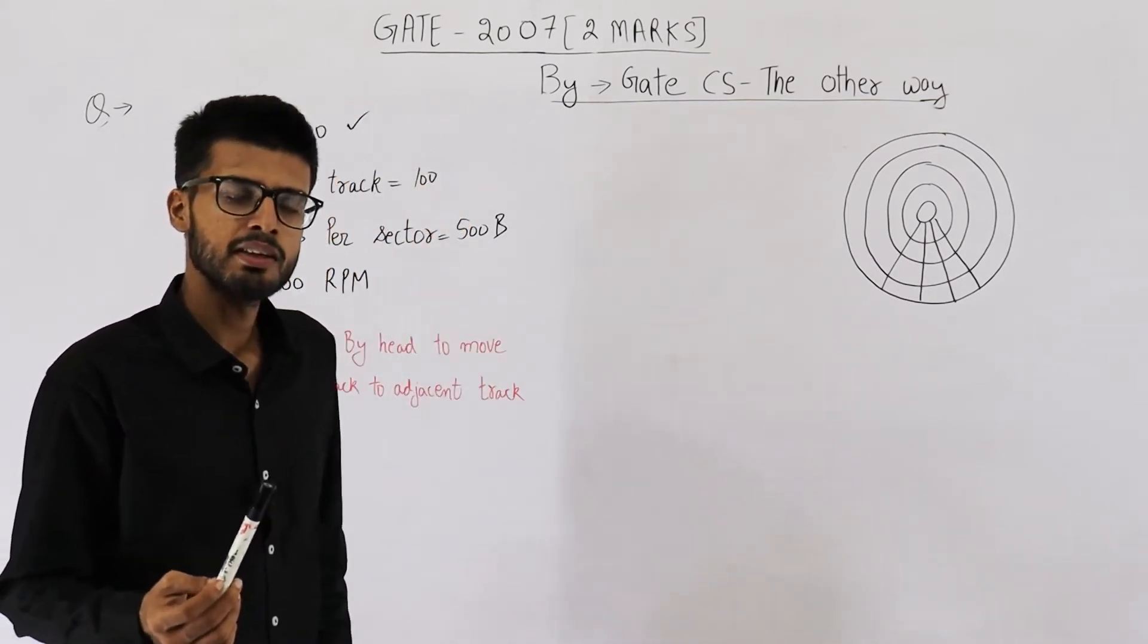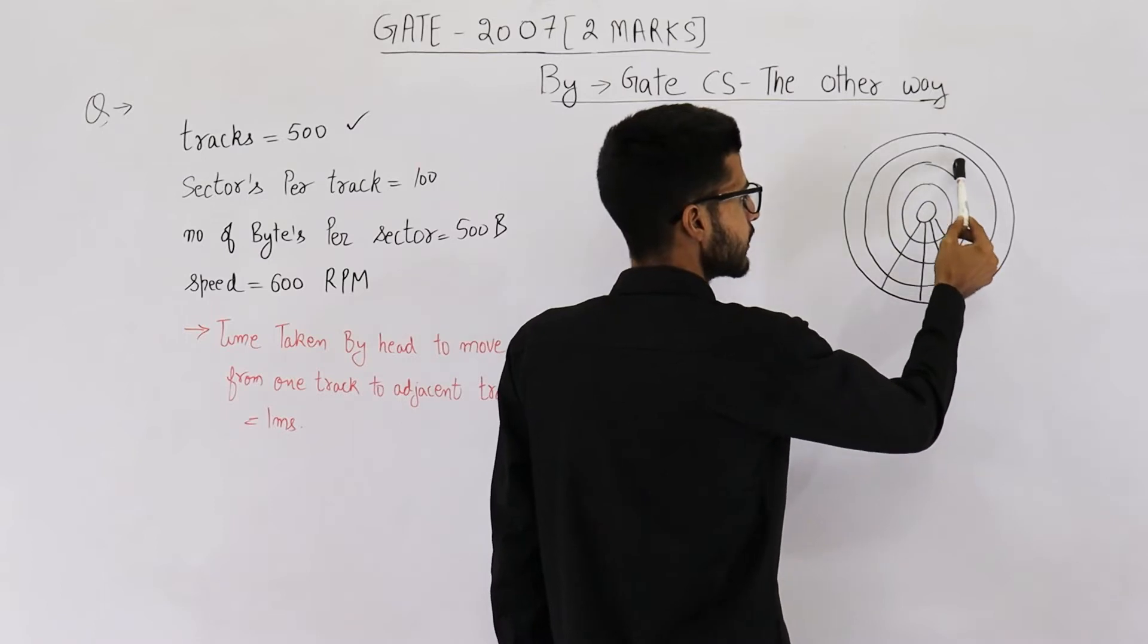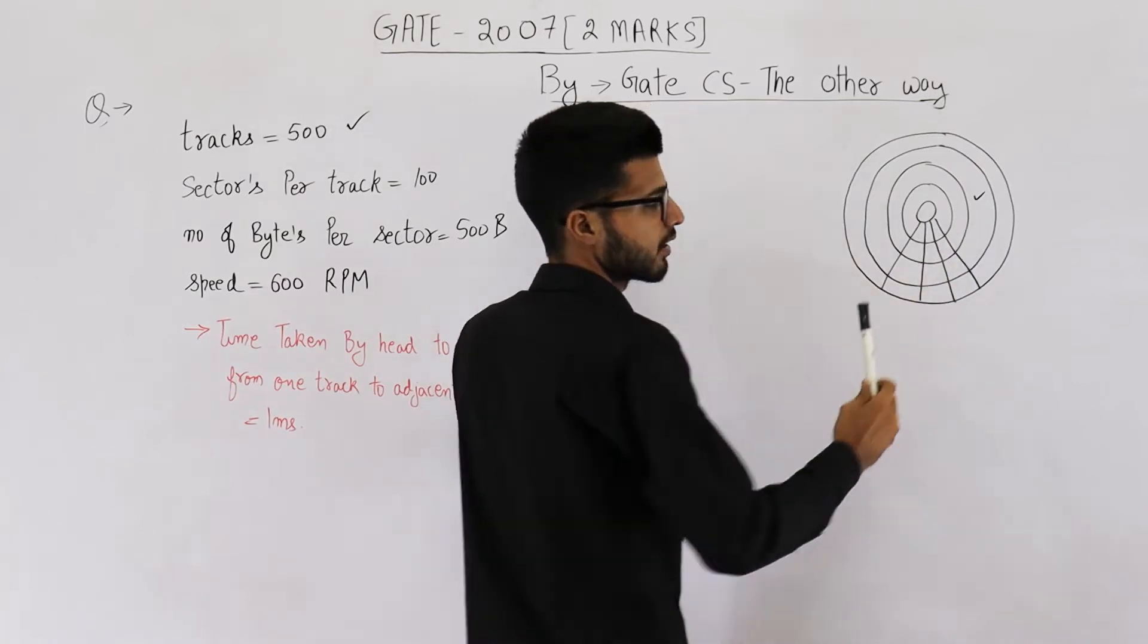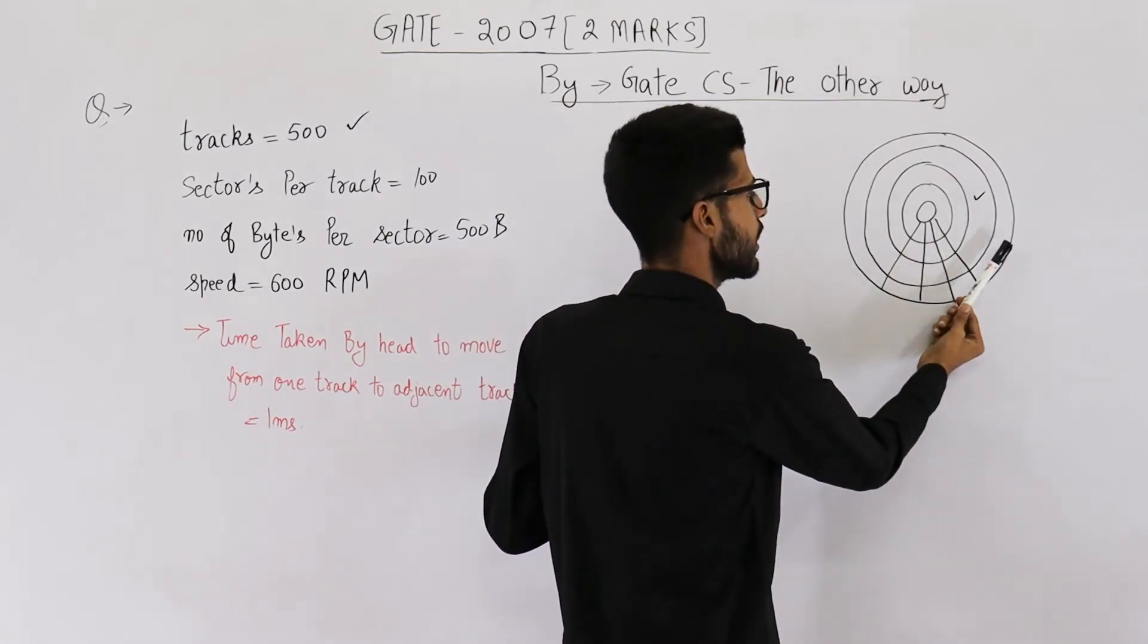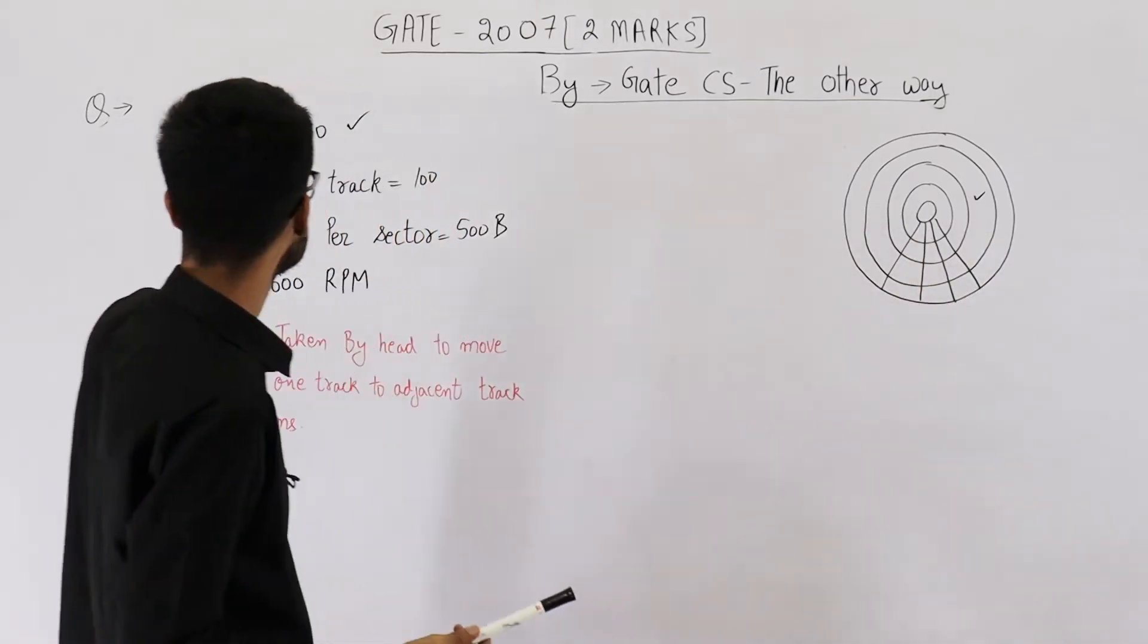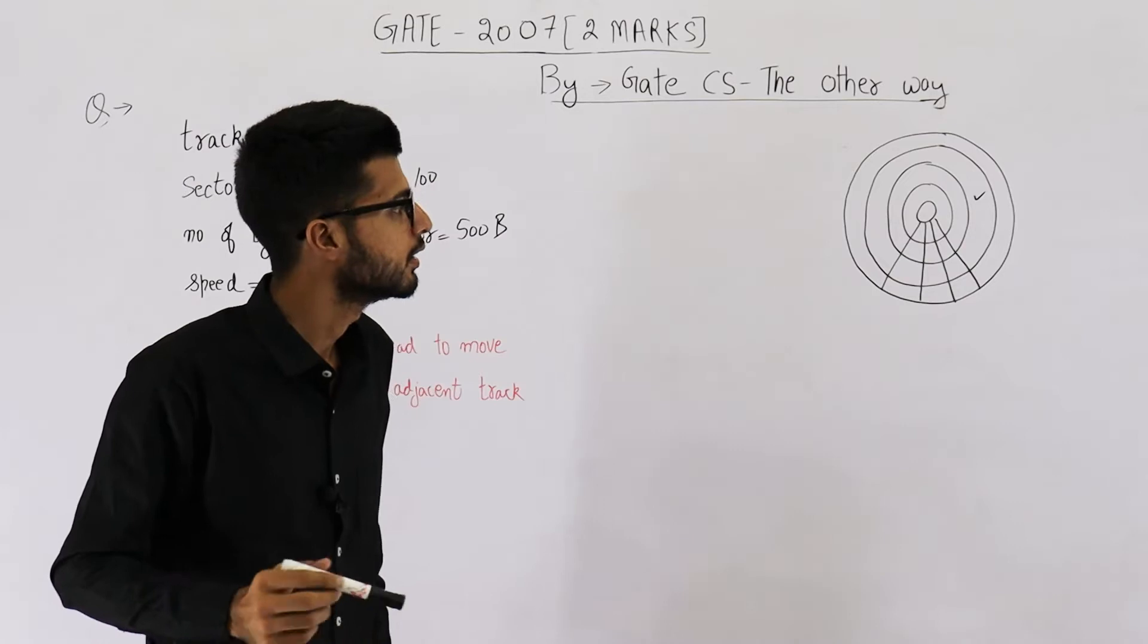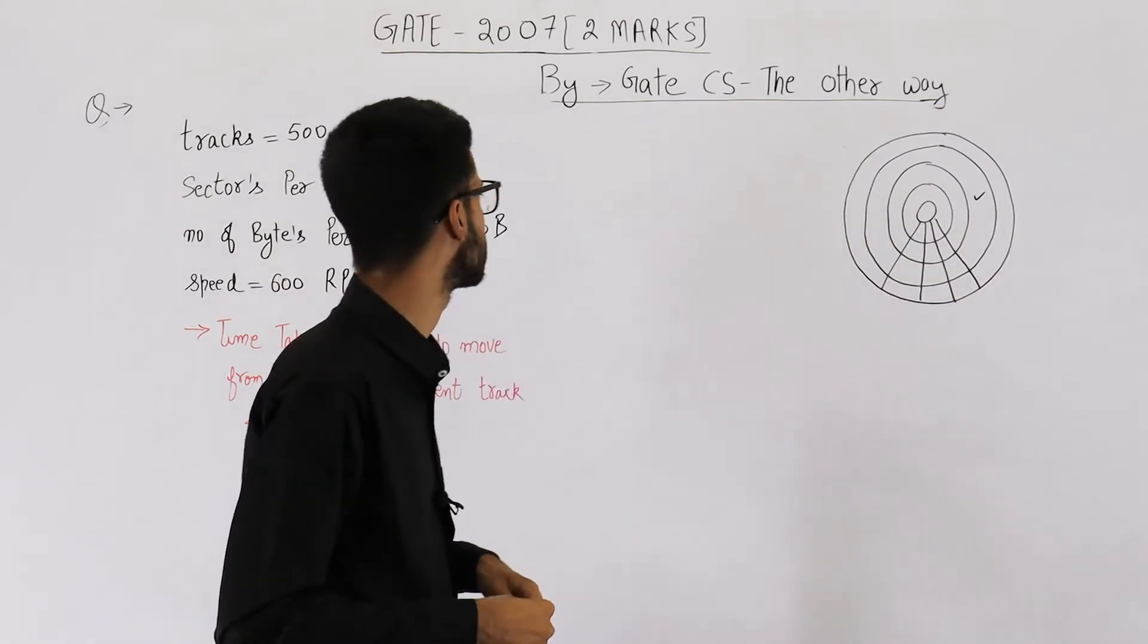So what we are going to do is we'll be finding the average number of tracks that will be crossed. There are two extreme cases. One extreme case is you don't need any seek time at all. For example, this is the track that CPU has requested. You need some data from this track, and there's a possibility that head is already on this track, so no seek time is required. This is the best case. Another possibility is you are on the outermost track and the data is requested from the innermost track. So in this case, you will have to cross 499 tracks because there is a total of 500 tracks. Don't say it's 500 tracks because we are already on the first track. This one will not be counted. So total is 499.